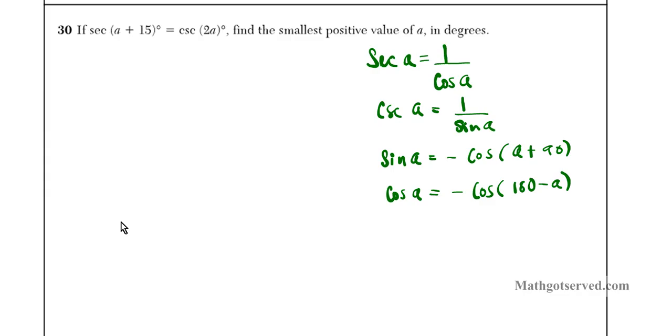This is the same thing as cosine a minus 180. So if you shift a graph 180 degrees to the right and reflect it downwards, you can end up with cosine a. So these are the identities I'm going to be using to solve this problem. Alright, so first of all, let's rewrite the problem. Secant a plus 15 is equal to cosecant 2a. Now let's use the reciprocal identities here.